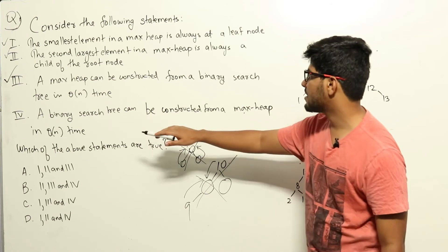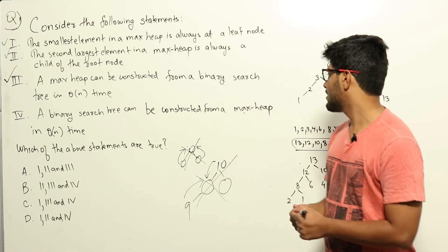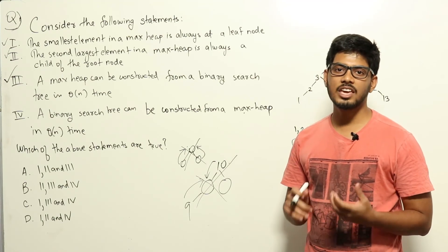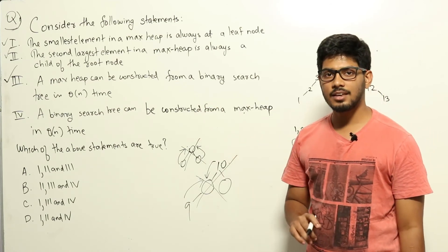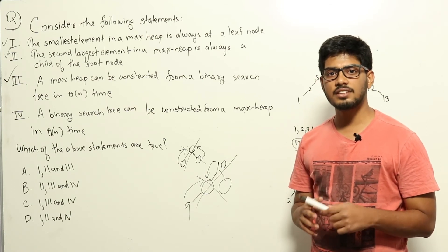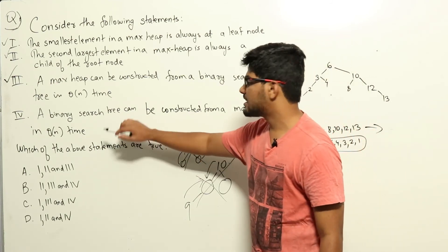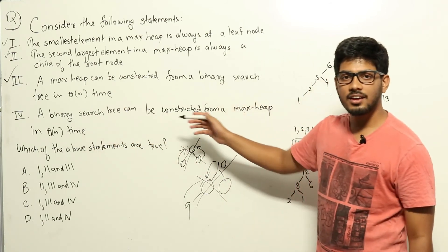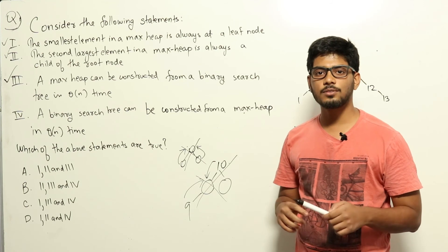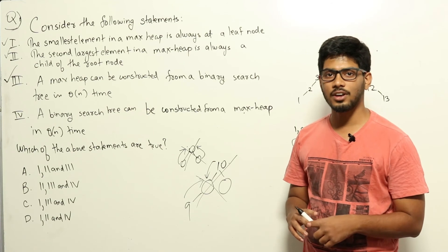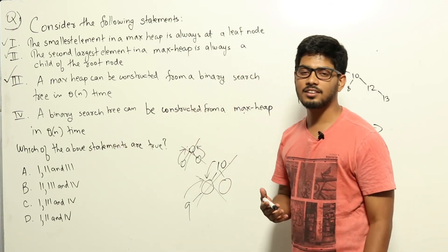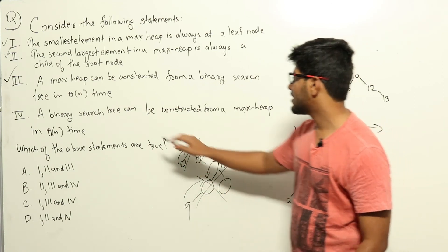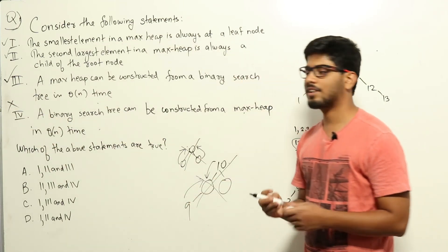If we could construct a binary search tree from a max heap in theta(n) time, that means we could sort all elements in a max heap in theta(n) time. But from heap sort, we know that constructing the max heap takes theta(n) and retrieving each element takes theta(n log n), so sorting takes theta(n log n) in total. If statement 4 were true, we would have a new sorting algorithm more efficient than n log n, which we know is not possible. Therefore, statement 4 is false.